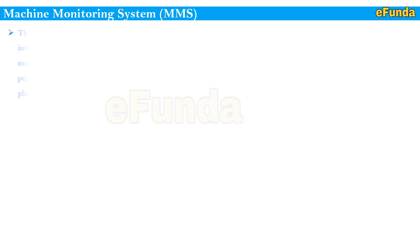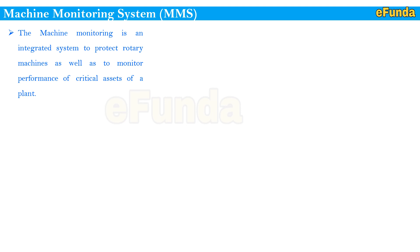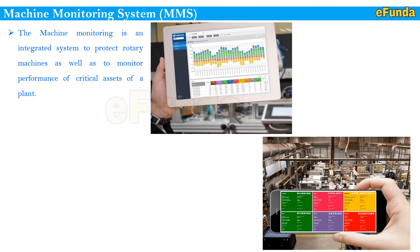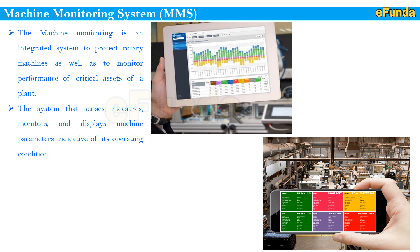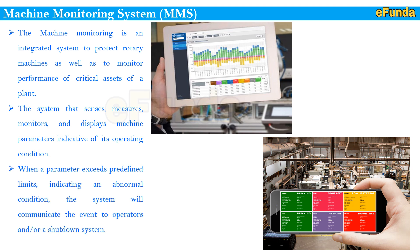Machine monitoring system is an integrated system to protect rotary machines as well as to monitor the performance of critical assets of a plant. The system senses, measures, monitors, and displays machine parameters indicative of its operating conditions. When a parameter exceeds a predefined limit indicating an abnormal condition, the system will communicate the event to the operator or take the system into shutdown. The goal of the system is to mitigate damage to the machine.